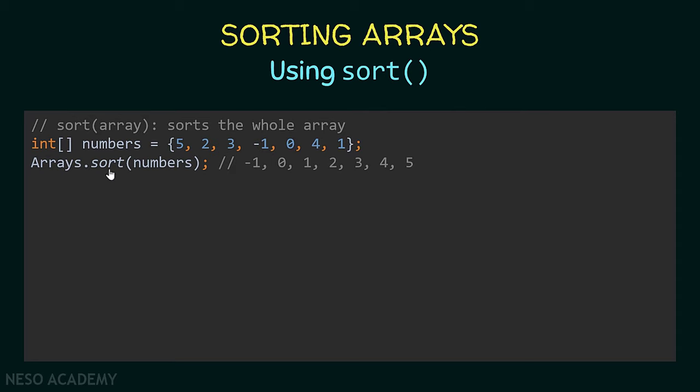The sort method will modify the original array. This is possible because arrays are passed by reference. So after this statement is executed, if you try to print the numbers array, you will see the sorted result.